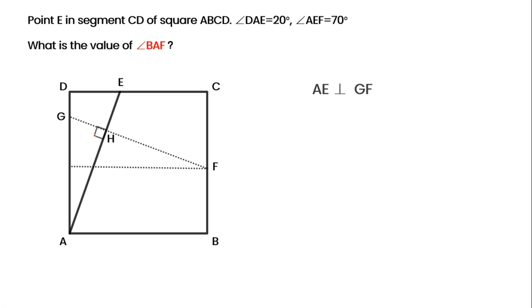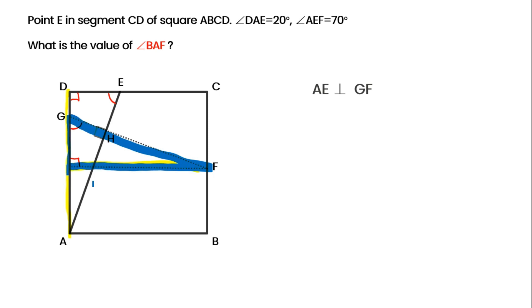Making a perpendicular segment to AD — because these two angles are equal and these two sides are equal, these two right triangles are congruent. Therefore, AE equals GF.